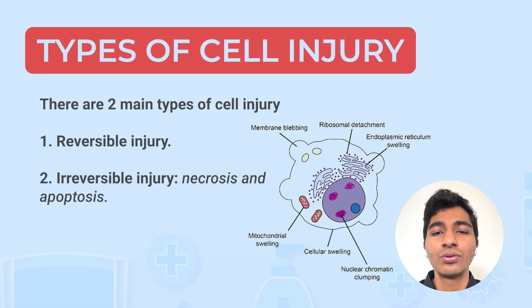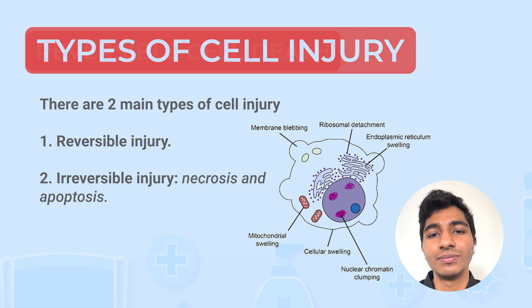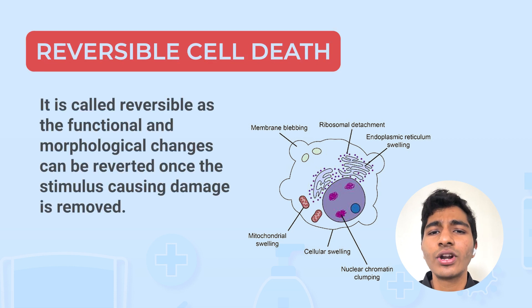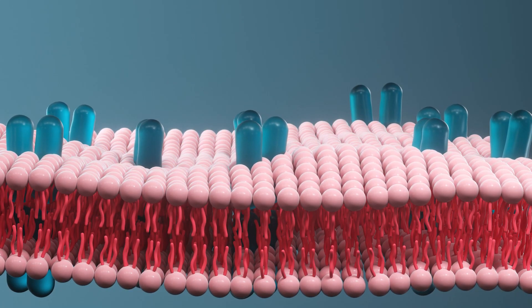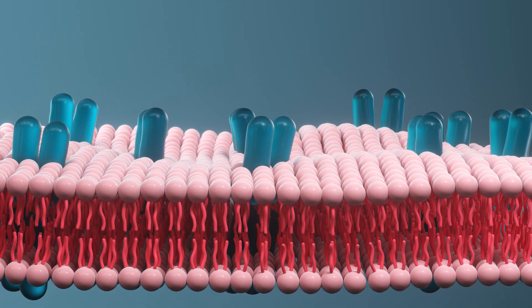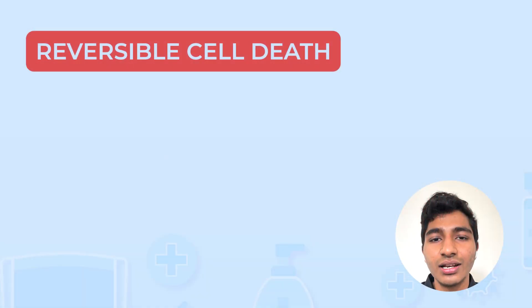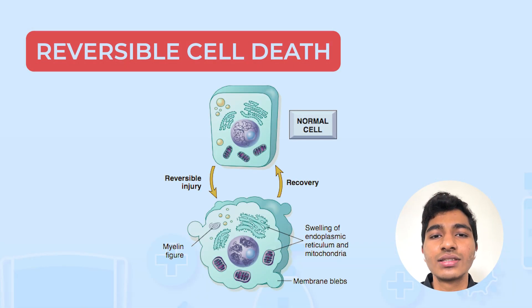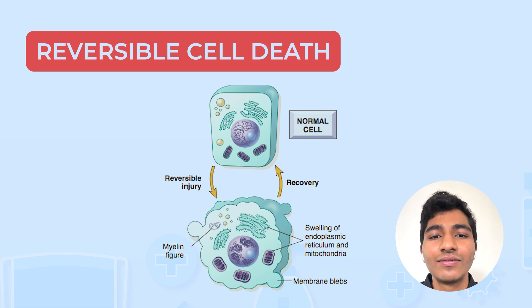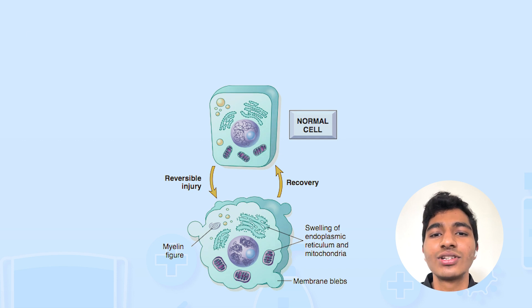Now there are two main types of cell injury one needs to keep in mind: one is reversible and the other one is irreversible. Reversible cell injury — the name itself is self-explanatory. Reversible means it can come back to its original state. It is called reversible as the functional and morphological changes that a cell undergoes during this process can be reverted, and this change can be reverted once the stimulus causing damage is removed.